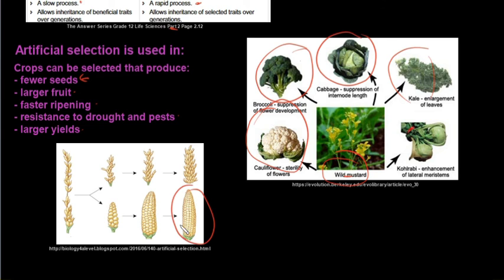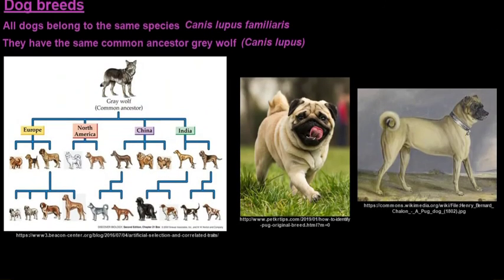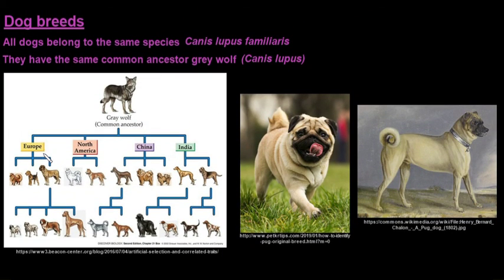Corn, as another example, didn't always look like this. It looked like that. It looked like a grass, and it was actually a lot of researchers could not link these two for very long because they looked so different.